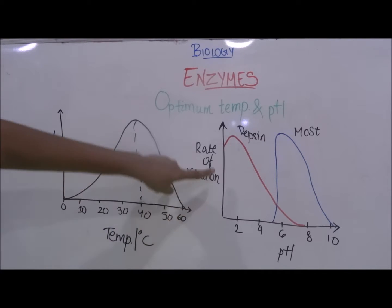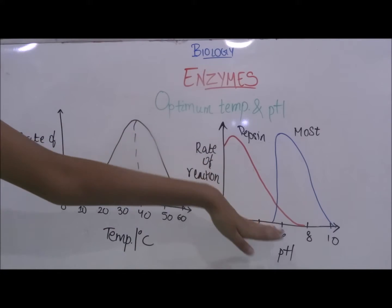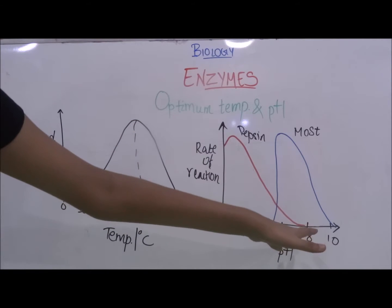So as you can see the rate of reaction is highest at around pH of 2 which is a very strong acidic condition. And it decreases until it reaches zero at about pH of 8.